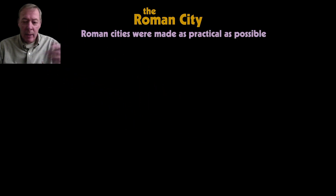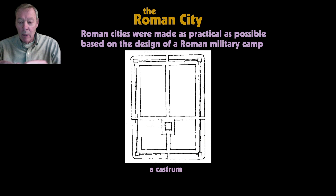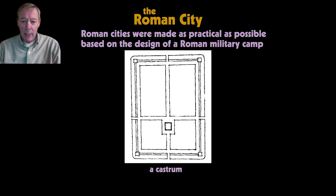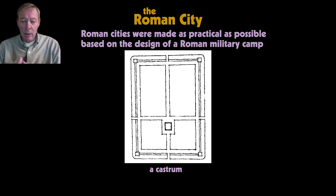The Roman city was an example of practicality and convenience. They were based on the design of a Roman military camp. Whenever the Roman legions went on campaign, they would march for a portion of the day, and at the end of the day they would stop and build a military camp—all based on the same very practical and utilitarian design.